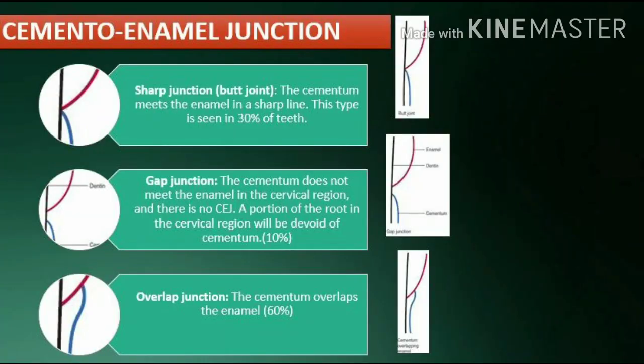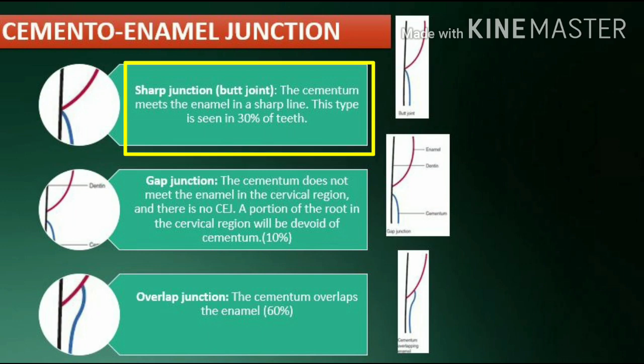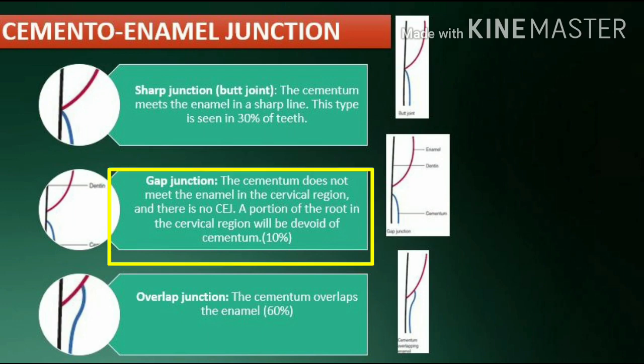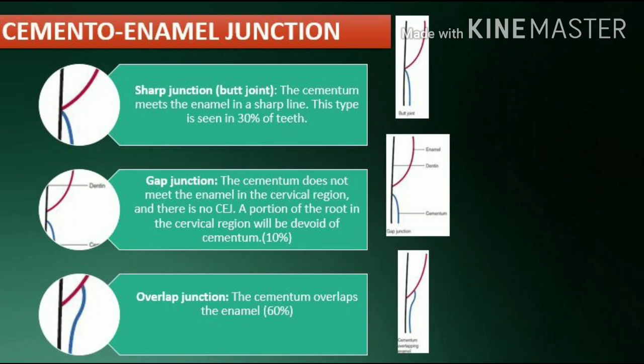Cementoenamel junction (CEJ) is the junction between the cementum and the enamel at the cervical portion of the teeth. Three types of junctions exist. Butt joint: the cementum meets the enamel in a sharp line — this type is seen in 30% of teeth. Gap junction: the cementum does not meet the enamel in the cervical region, and a portion of the root in the cervical region will be devoid of cementum.